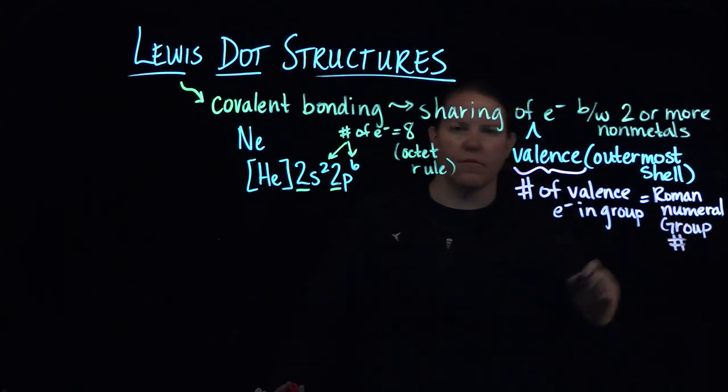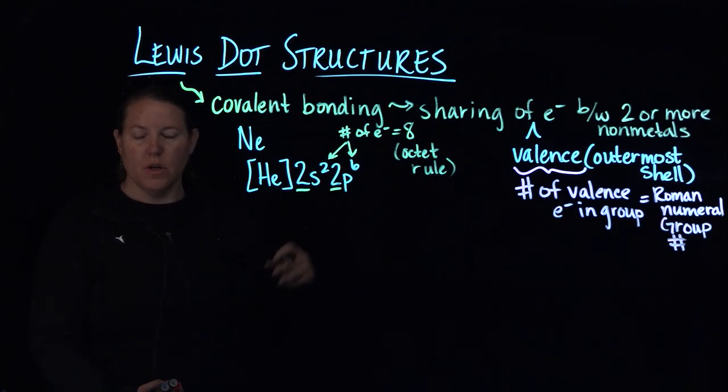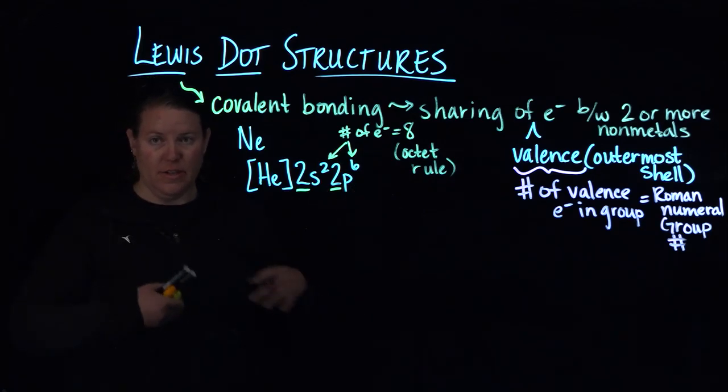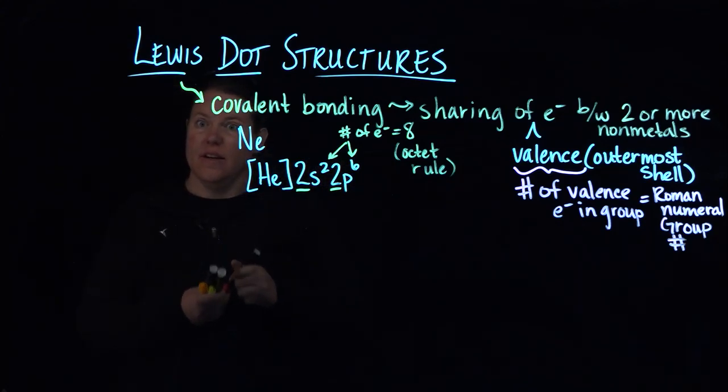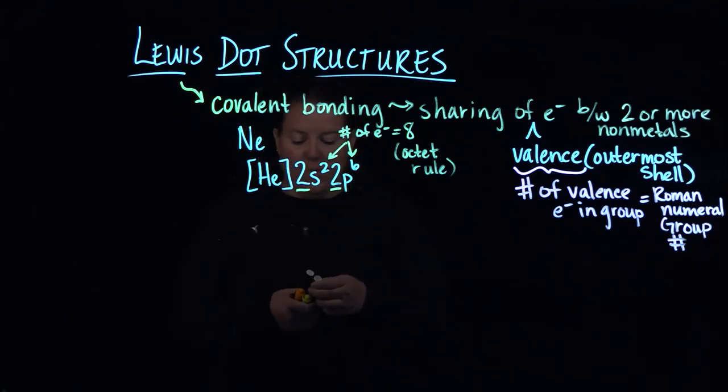Or the ones digit of the more modern numbers, the 1 through 18 numbers. You would just look at the ones digit because there's no way there's going to be 18 electrons. So you look instead of at the 18 you look at the 8 for the noble gases, and that reiterates the octet rule.